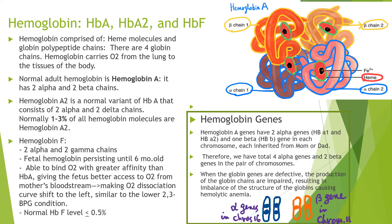Hemoglobin is the main component of the red blood cells, carrying oxygen from the lung to the tissues of the body. It is comprised of heme molecules and globin polypeptide chains. There are four globin chains and heme molecules in each globin subunit with an iron molecule in the center.